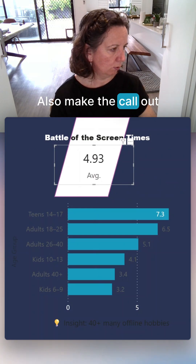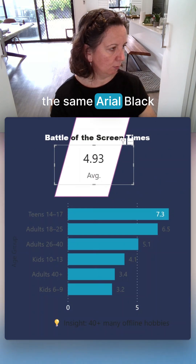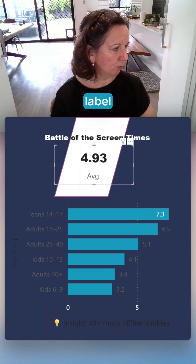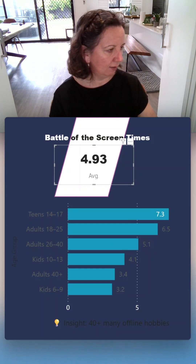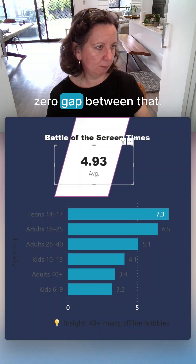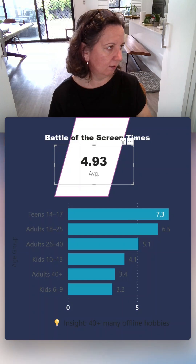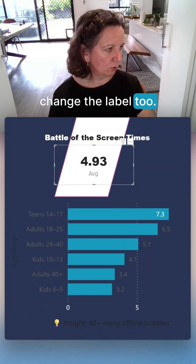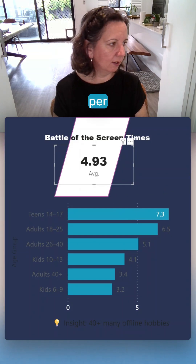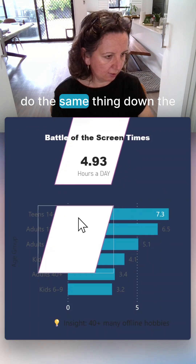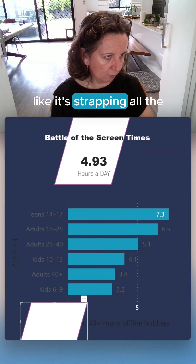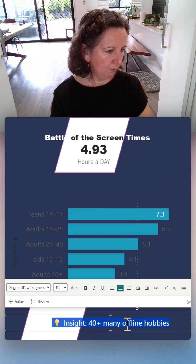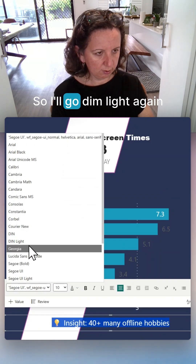Resize it a bit and we'll bring our data card up. Also make the callout the same Arial Black. We'll make the label smaller, make it white with zero gap between that. Change the label styling and do the same thing down the bottom — it's striking all the way through.